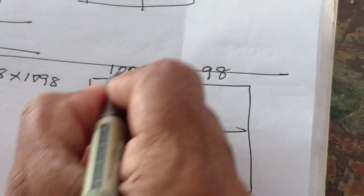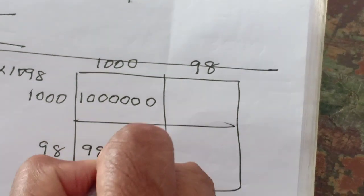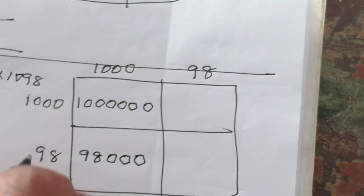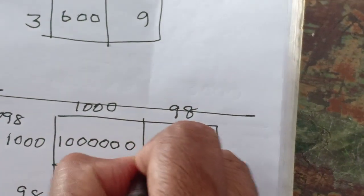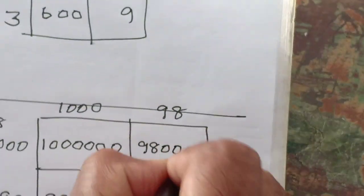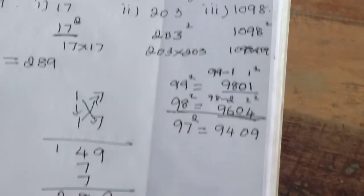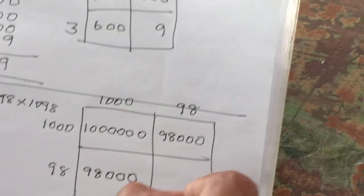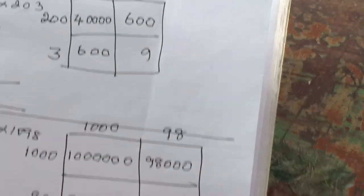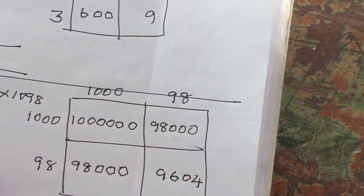Next one is 98 into 1000. That means what? 98, how many 0s? 3 0s. Here, next one, 1000 into 98, 98, how many 0s? 3 0s. 98 into 98, you know the easy way, isn't it? That is, 2 should be added to get 100. That means 04, then 98 minus 2 is 96. So just you add all these things.